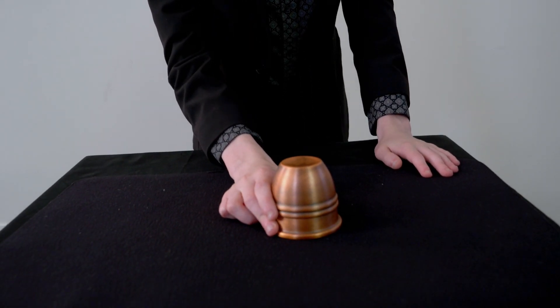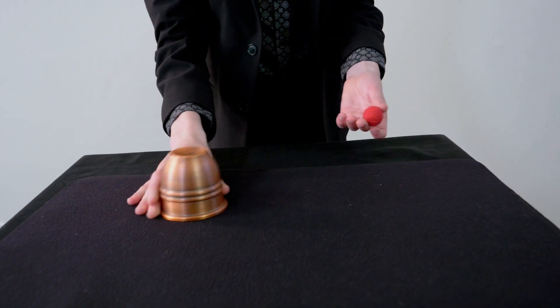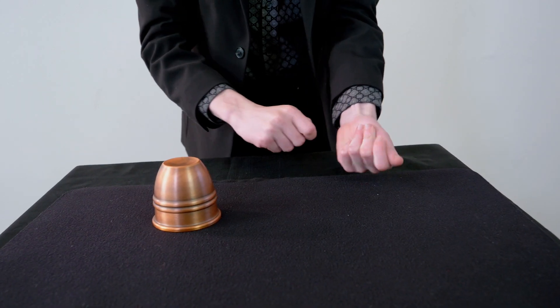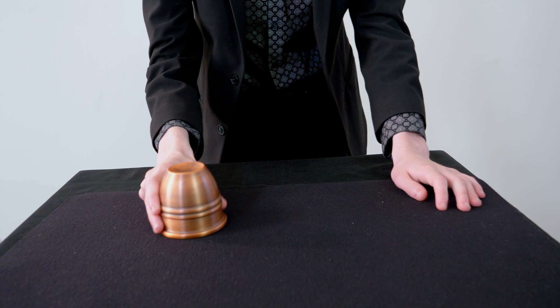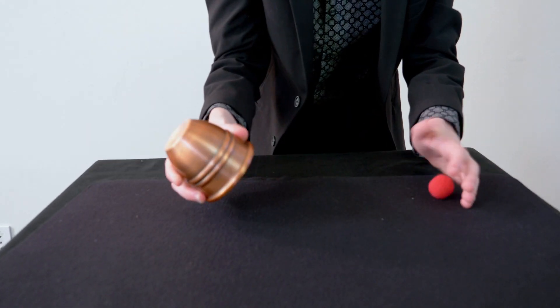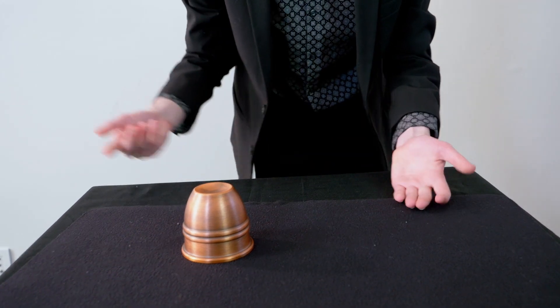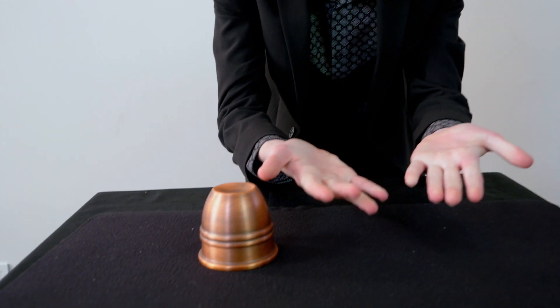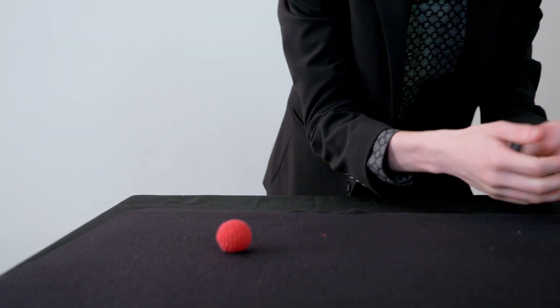See, quantum physics tells us that when we're not observing a particle, we cannot know exactly where it is or how fast it's moving. In fact, the more accurately we know where it is, the less accurately we know how fast it's moving. And the more accurately we know how fast it's moving, the less accurately we know where it is.